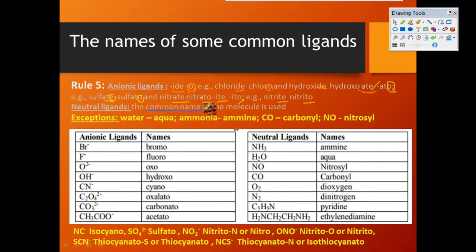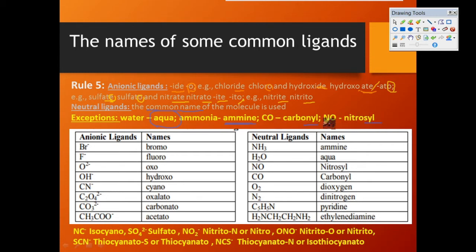In the case of neutral ligands, they are named with their common names, but there are some important exceptions. Water should be named as 'aqua' — it should not be called water. Ammonia should be named as 'amine', and note that the spelling uses two m's. Carbon monoxide is named 'carbonyl', and nitrogen monoxide (NO) is written as 'nitrosyl'.